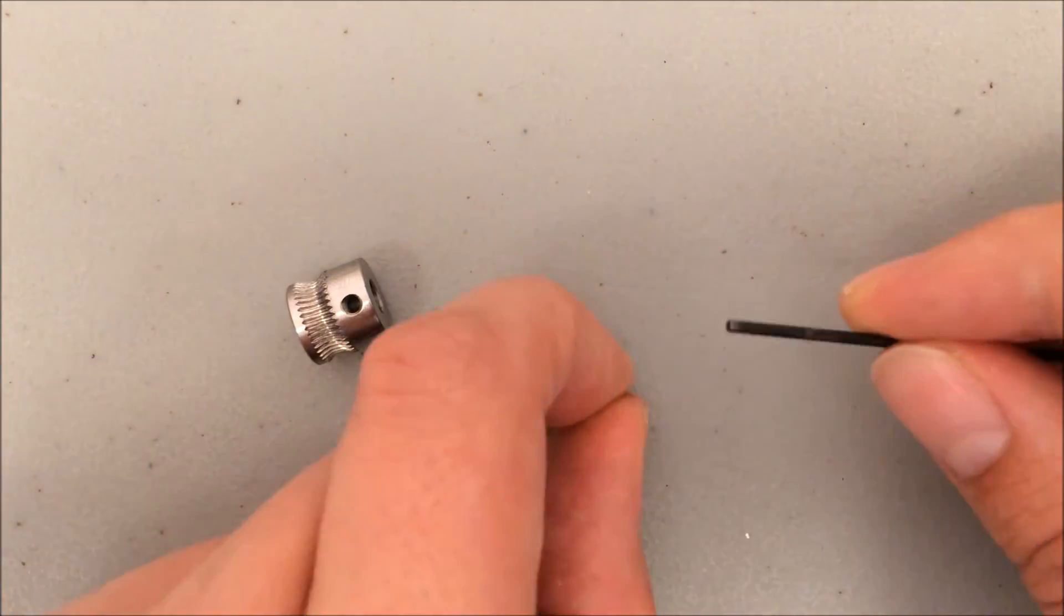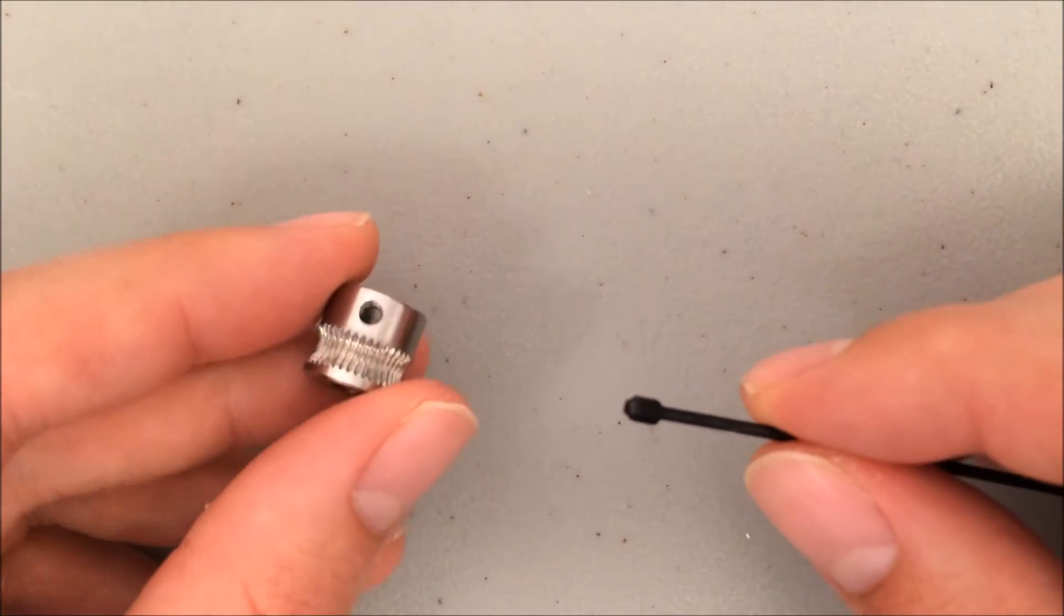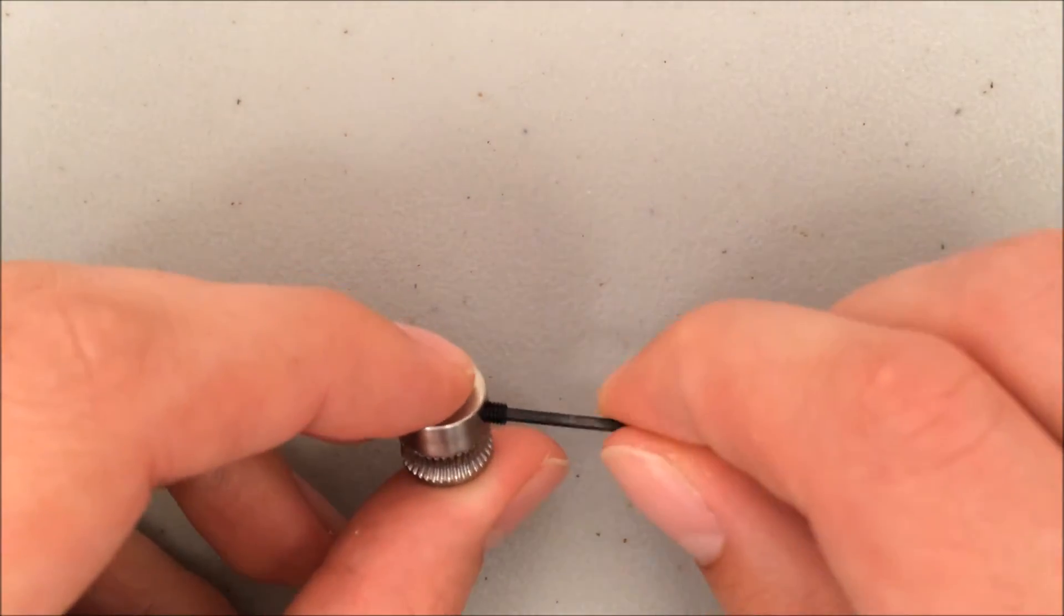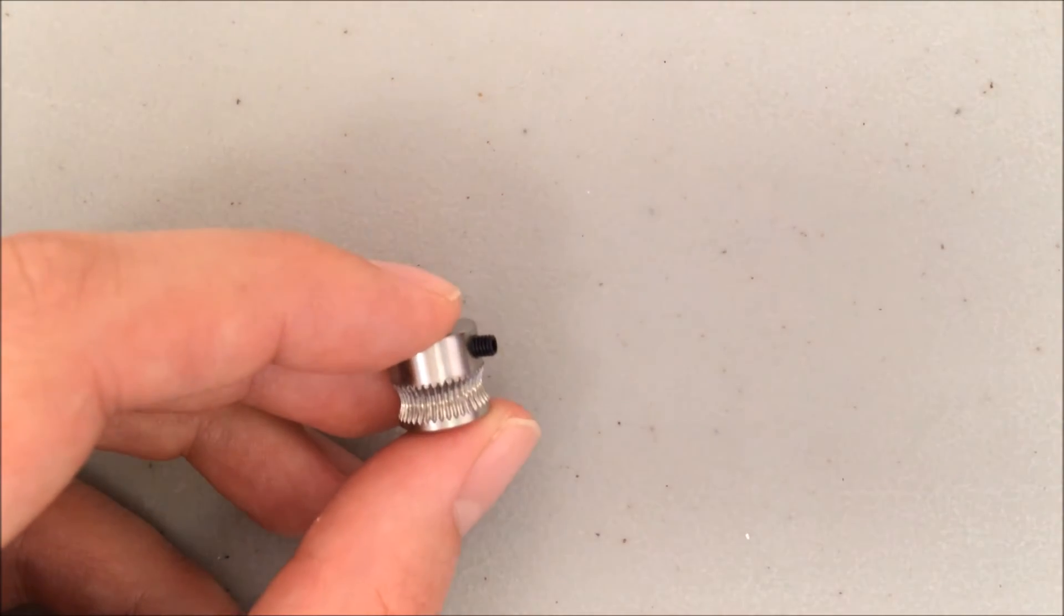As usual, I like to pre-install the set screws, so I'm going to take the set screw and just feed it into the extruder gear. I don't need to put it all the way through, I just want to get it started. It's kind of hanging out over the end there. I'm going to add some threadlocker to it in just a moment.